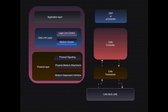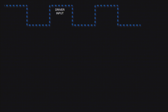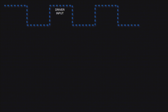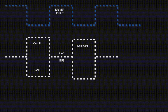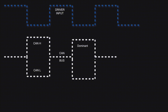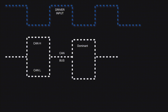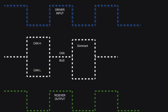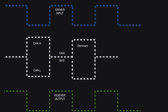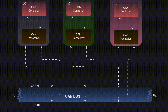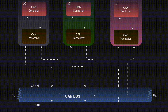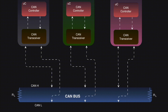If we go by the OSI layer, it consists of the application layer, data link layer, and physical layer. At the physical layer, all the signaling is done through CAN transceiver and CAN controller. At the data link layer we have the DSP microcontroller at the application layer. If we see the signaling, we get a driver input, then it checks CAN High and CAN Low on the bus — whichever is dominant — and at the receiver output we receive the output. Since it is serial, it can be utilized at a multi-drop node so we can connect multiple devices on the same bus.